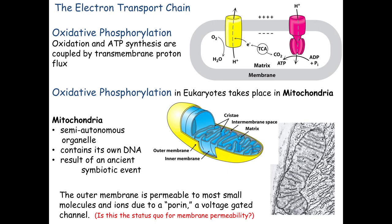The goal of all this electron transport was to have a series of complexes pump protons out of the mitochondria. This is happening in the matrix — the very center of the mitochondria — and we pump protons across the inner membrane. The mitochondria has two barriers, an inner and outer membrane, separating three compartments: the cytoplasm on the outside, the intermembrane space between the membranes, and the matrix in the very center.